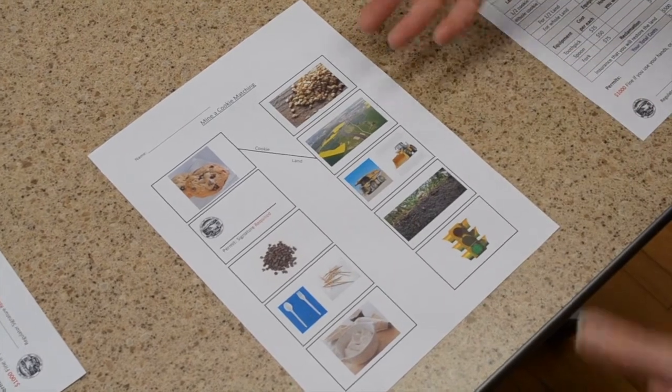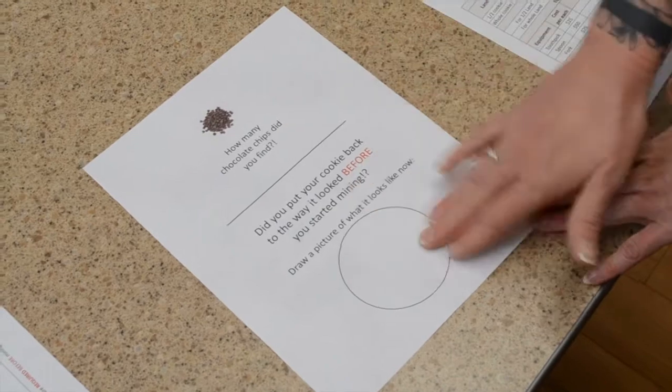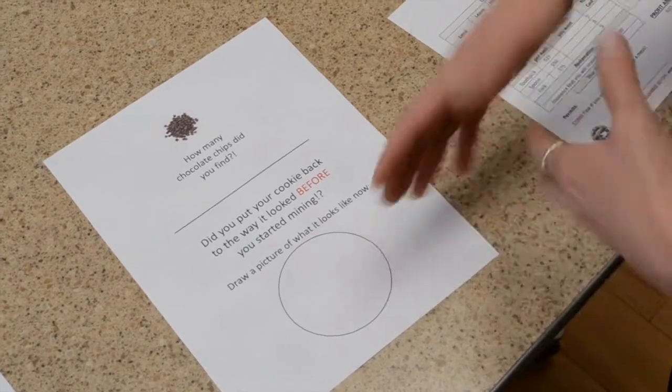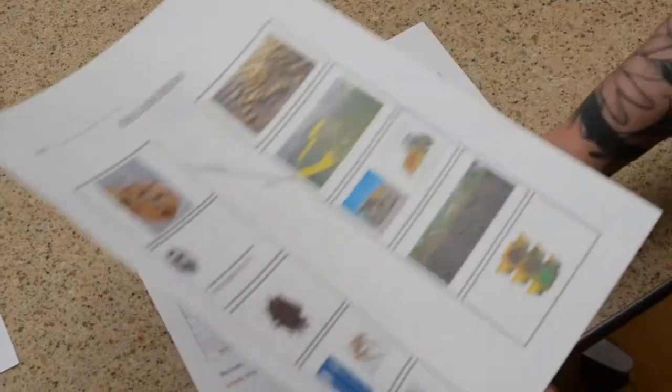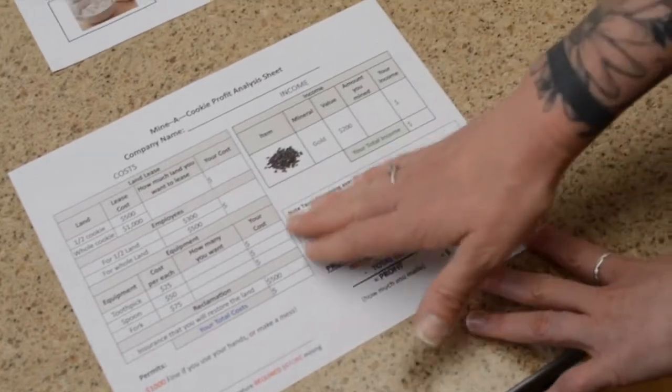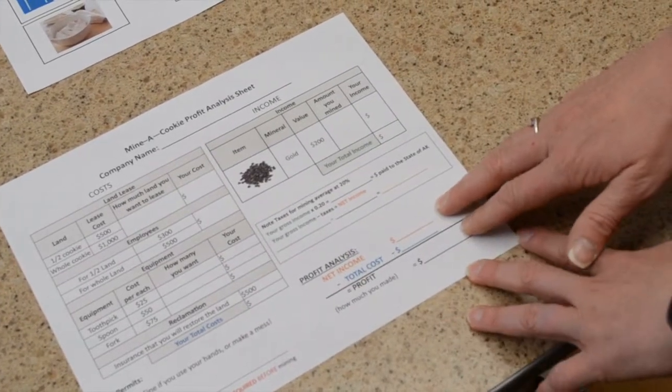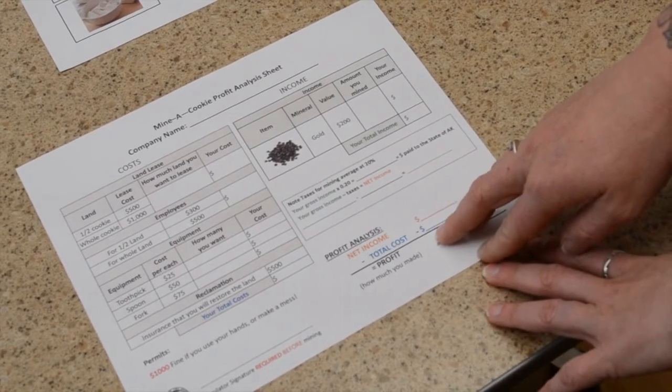You can do a basic matching activity and then just have them count how many chocolate chips and draw a picture of what their cookie looks like, getting the idea of reclamation back together. With much older students who can do more math, the costs are higher. However, there's also a taxes component here to look at gross income and net income as a part of their profit analysis.